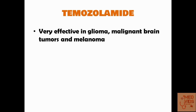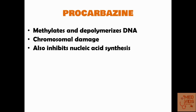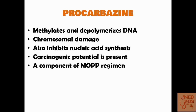Temozolomide is very effective in the treatment of glioma, malignant brain tumors, and malignant melanoma. Procarbazine, though classified under alkylating agents, has a somewhat different mechanism of action — it methylates and depolymerizes DNA, causing chromosomal damage and inhibiting nucleic acid synthesis. Because it causes chromosomal damage, procarbazine has mutagenic and carcinogenic potential, which can predispose the patient to secondary cancers. It is also a component of the MOPP regimen used in Hodgkin lymphoma.